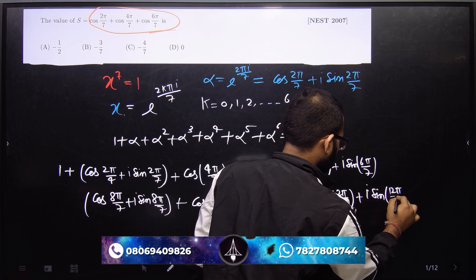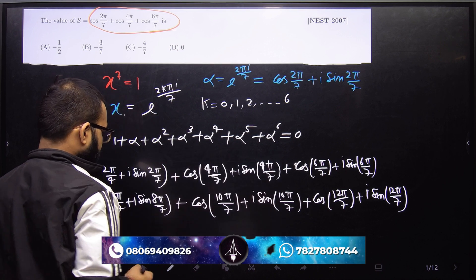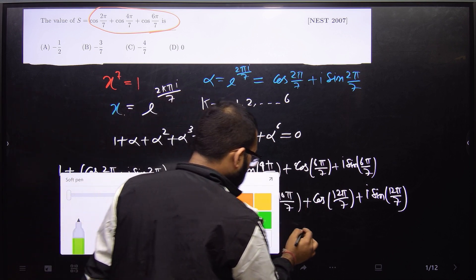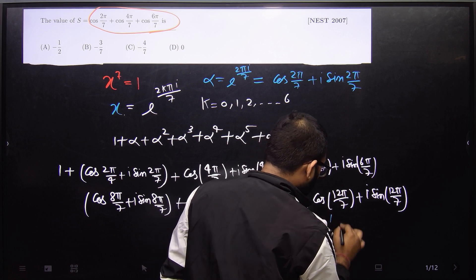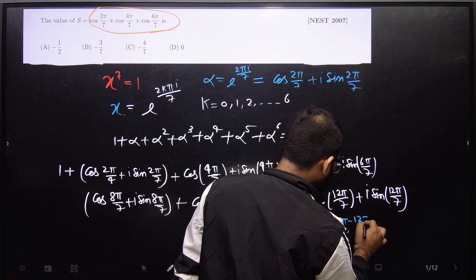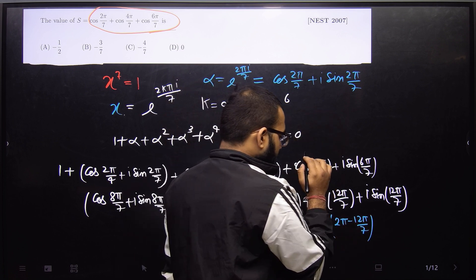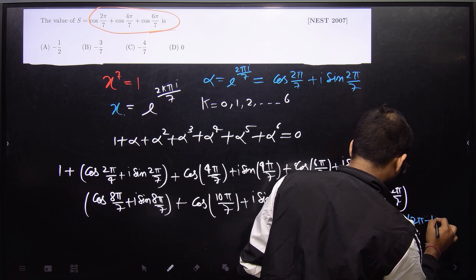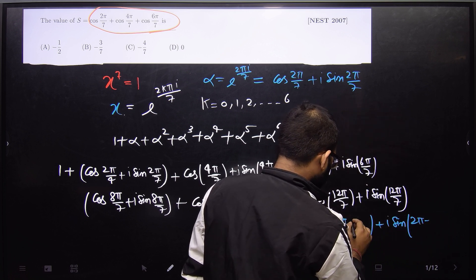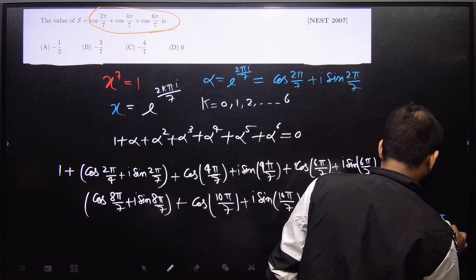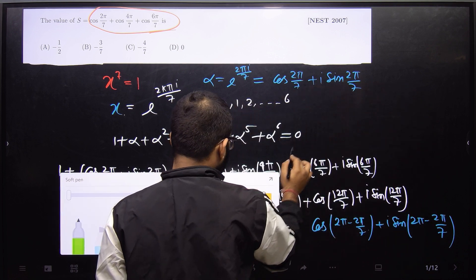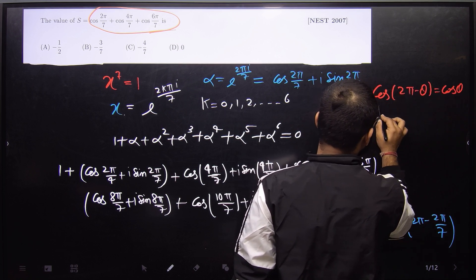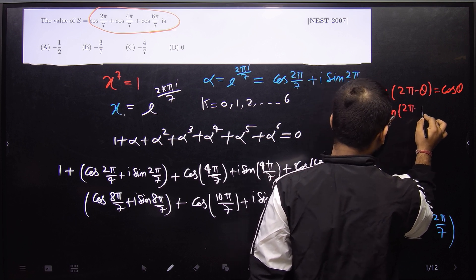We know that cos(12π/7) can be written as cos(2π − 2π/7). Similarly, other higher power terms can be rewritten using the identities: cos(2π − θ) = cos θ and sin(2π − θ) = −sin θ. So terms like α⁵ and α⁶ become cos(2π − 4π/7) + i·sin(2π − 4π/7) and cos(2π − 6π/7) + i·sin(2π − 6π/7) respectively.